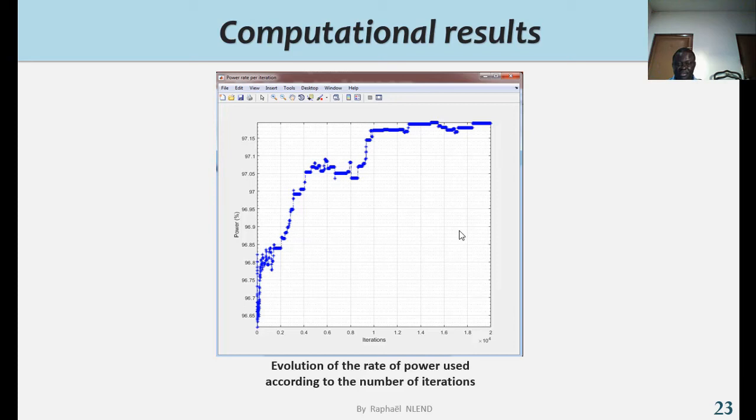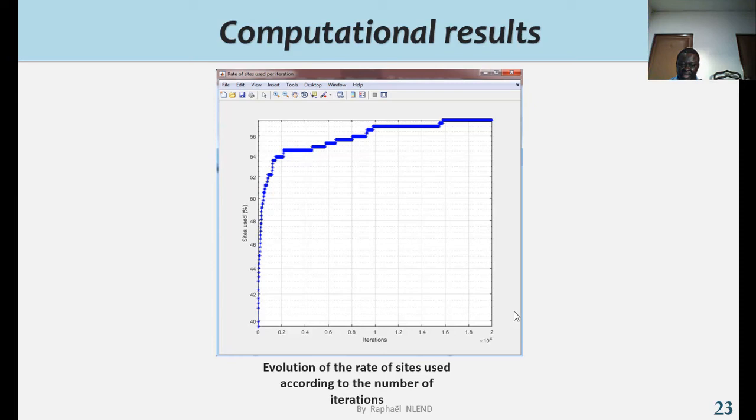We have another economy on saved sites. We have here the evolution of the rate of site used according to the number of iterations, which shows an evolution and a convergence of around 58 percent, resulting to an economy of around 42 percent.